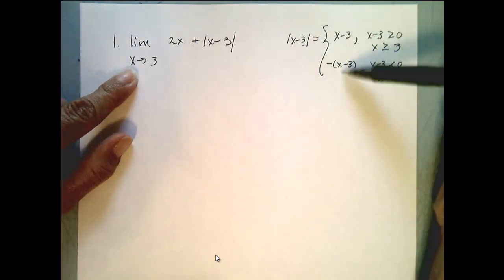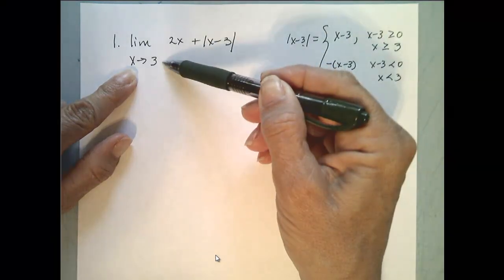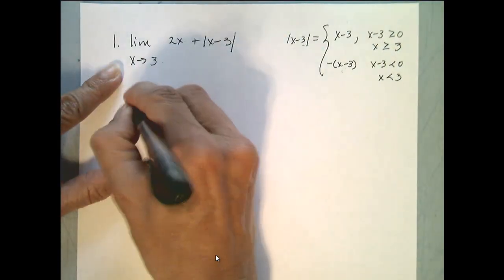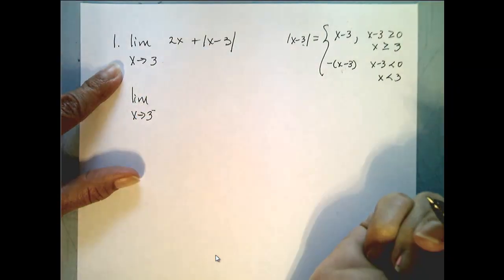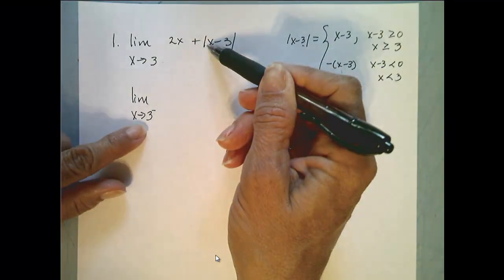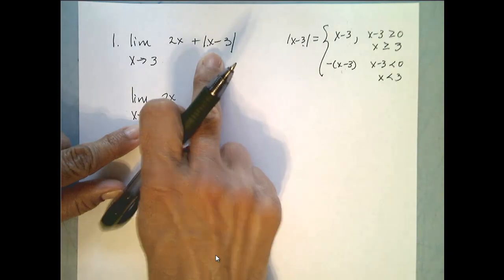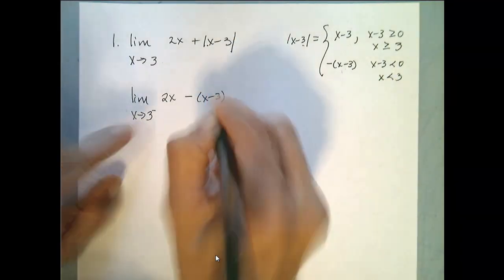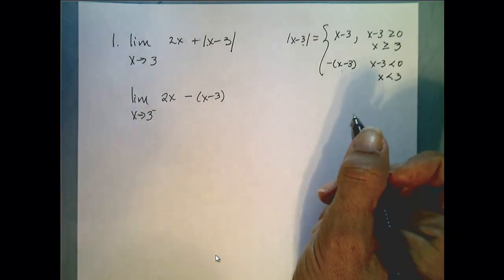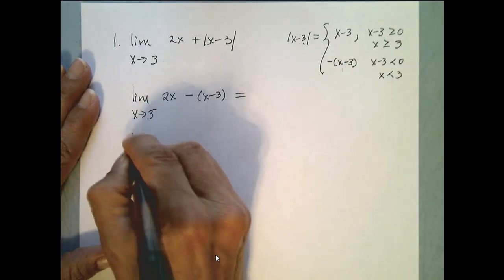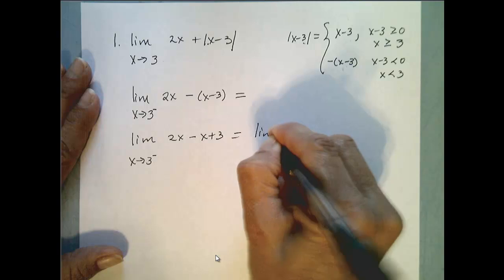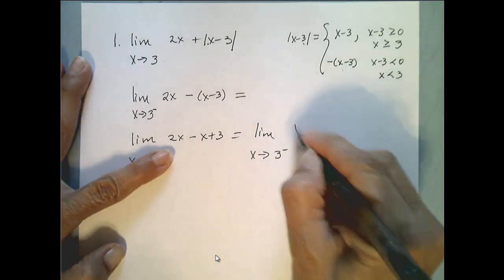Since our function is defined differently on either side of 3 and our limit is being evaluated at 3, we need to look at this limit from the left and from the right of 3. So let's first look at the limit as x approaches 3 from the left. The absolute value of x minus 3 equals negative x plus 3 for values of x less than 3, so from the left of 3. This equals the limit as x goes to 3 from the left of 2x minus x plus 3.